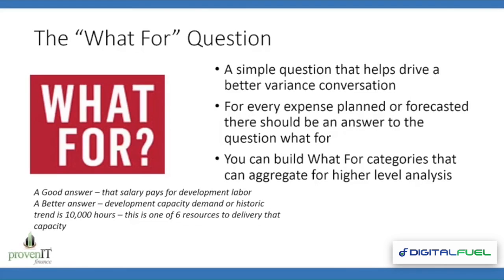A couple of examples. A good answer for 'what for': we have a salary expense entered into a plan or forecast with a comment that the salary pays for development labor. A better answer is that the development capacity either historically or the current demand says I need 10,000 hours, and this salary dollar is for one of six resources to deliver that capacity. Now I know that if I come in over or under that salary plan, I can look at whether I had seven resources when I planned on six, or whether I only had 8,000 hours instead of 10,000 — helping me understand the driver behind that variance. We can also build 'what for' categories to aggregate comments up into higher levels for trend analysis.